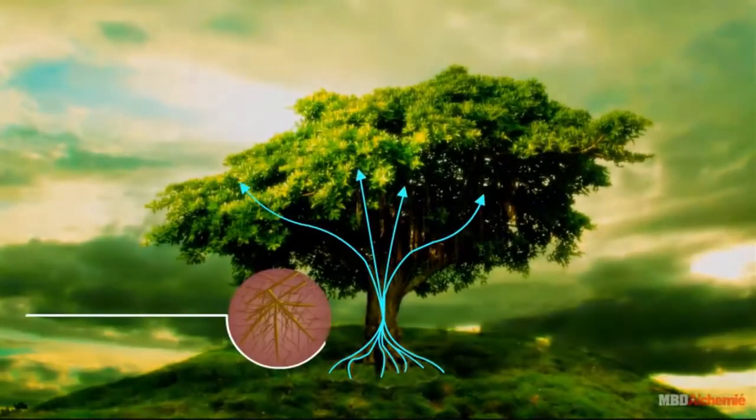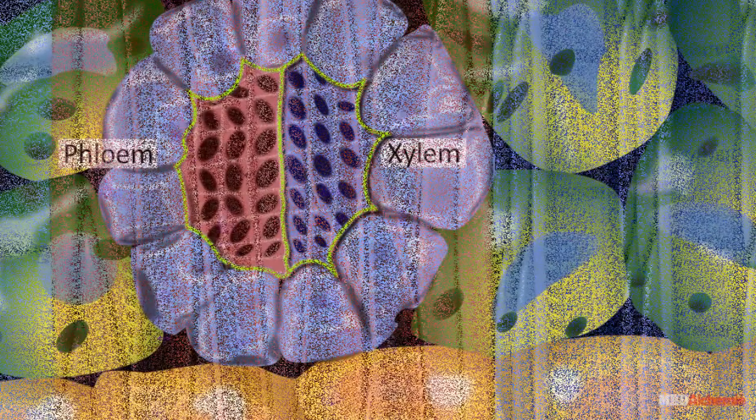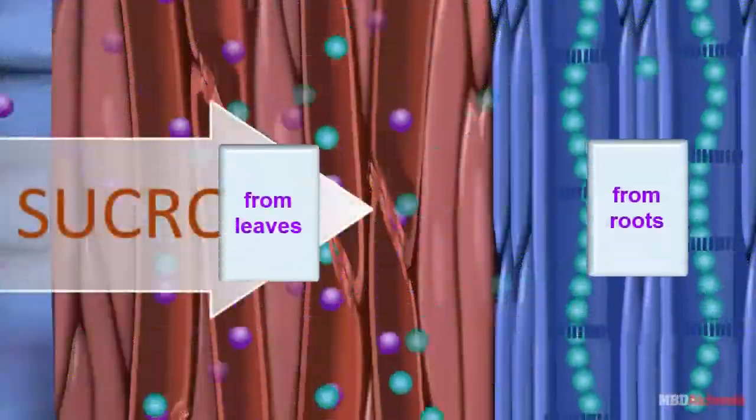Xylem generally conducts water towards the leaves, while phloem brings solutes from the leaves to nourish the roots. It's a simple give and take between the roots and the leaves with the stem mediating in between.